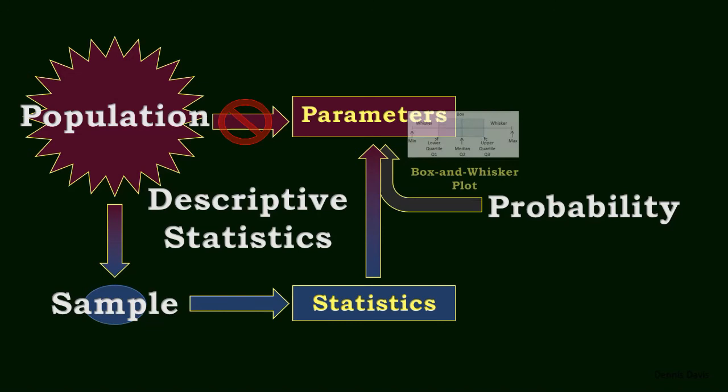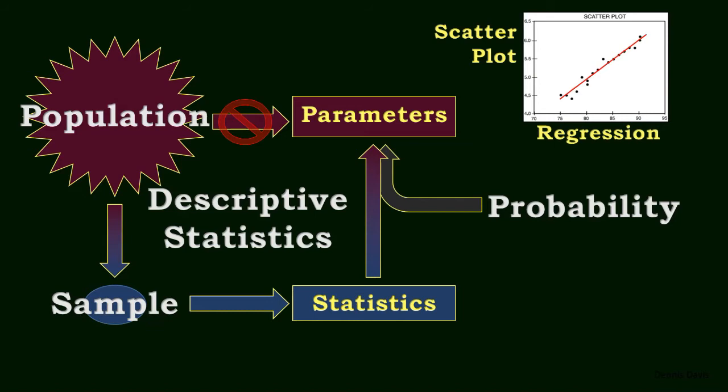For bivariate and multivariate data, we also have scatter plots and regression analysis, plus the related coefficient of determination and correlation coefficient, to tell us how closely our regression line fits the data, and residuals analysis to help us know if a straight line is the best fitting line, because the relationship between variables might not always be linear.